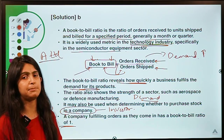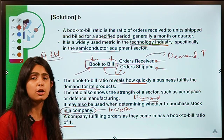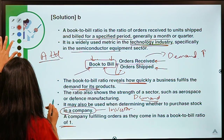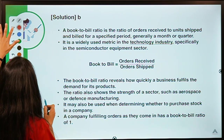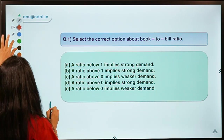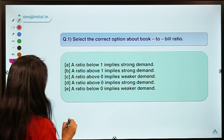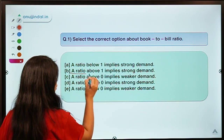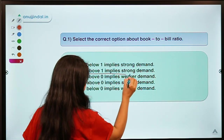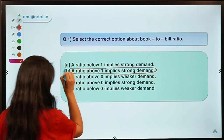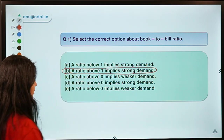That tells me the company has huge growth potential. It's a very simple question and a very simple ratio. That is why the correct option is: a ratio above one implies strong demand.